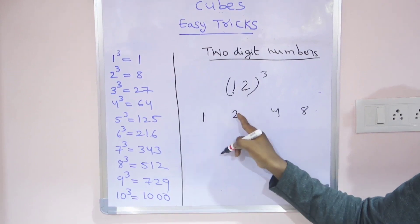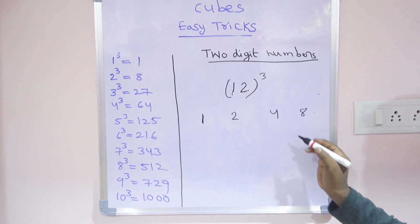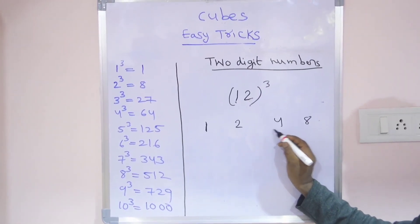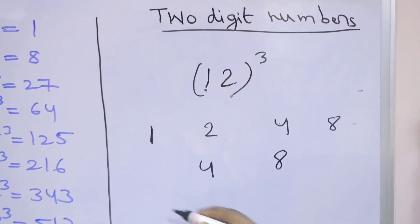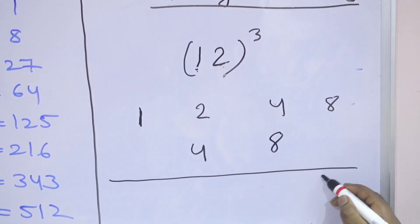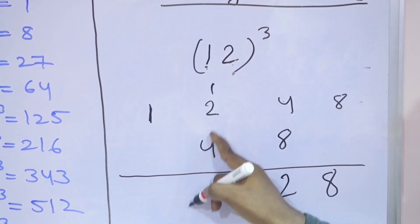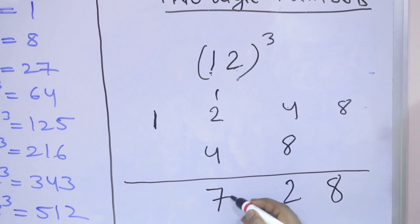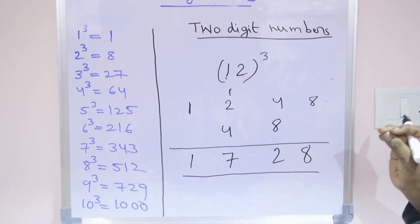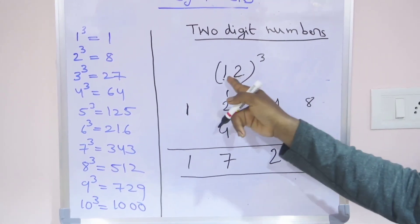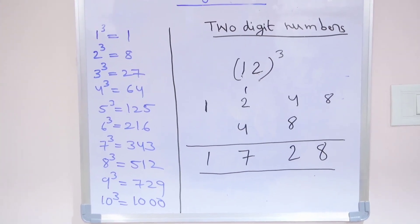The numbers in my picture: 1, 2, 4, 8. Next, the middle numbers take double: 4 double is 8. Like that you can write and add these numbers. First 8, 4 plus 2 is 12, write 2 and carry 1, 4 plus 2 plus 1 is 7, and 1. So 1728 is the cube of 12. This is the first method when starting with 1.